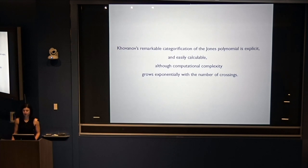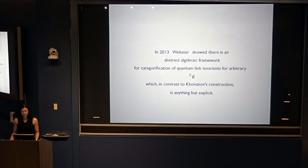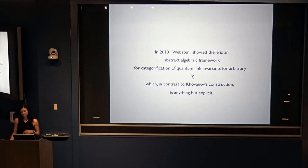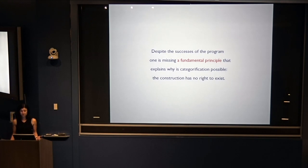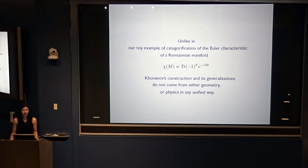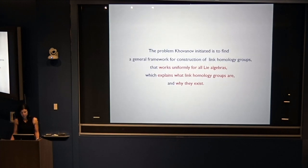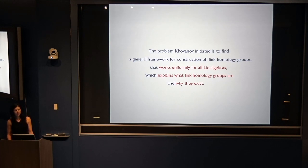Khovanov's remarkable categorification of the Jones polynomial is very explicit and easily calculable, although computational complexity grows exponentially with the number of crossings. In 2013, Webster showed that there is an abstract algebraic framework for categorification of link invariants of arbitrary Lie algebra, which, in contrast to Khovanov's construction, is anything but explicit. Despite the successes of the program, one is missing a fundamental principle that explains why categorification is possible — this construction really has no right to exist. Unlike the toy example, Khovanov's construction and its generalizations do not come from either geometry or physics in any unified way. The problem Khovanov initiated is to find a general framework for construction of link invariants that works uniformly for all Lie algebras and explains what link homology groups are and why they exist.